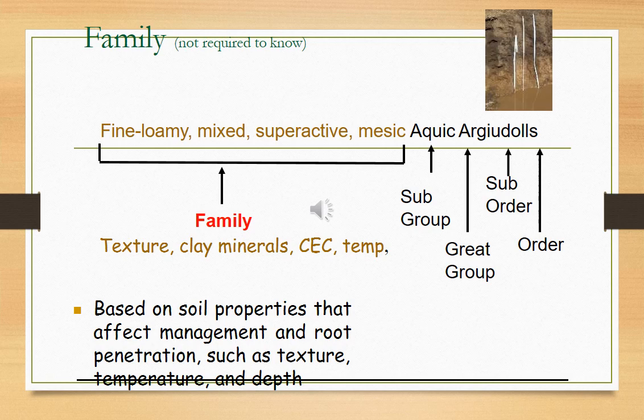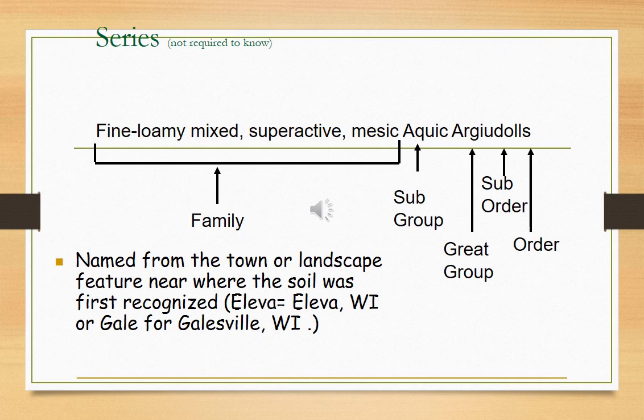Soil families are separated within a subgroup primarily on the basis of soil properties important to the growth of plants. Some of these soil properties are texture, mineralogy, pH, distribution of rainfall, and structure, as you can see in this slide.